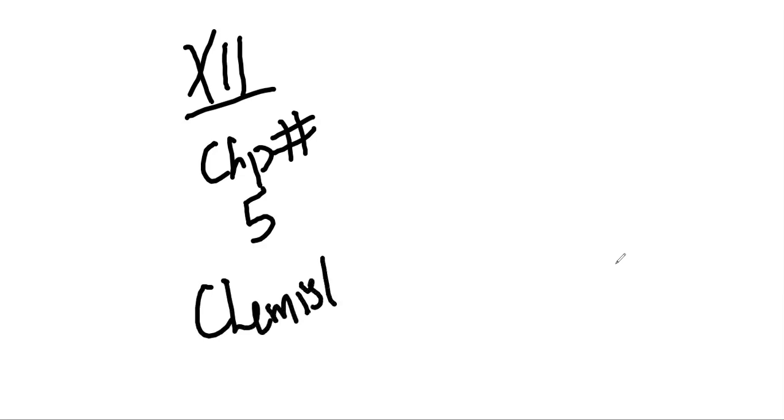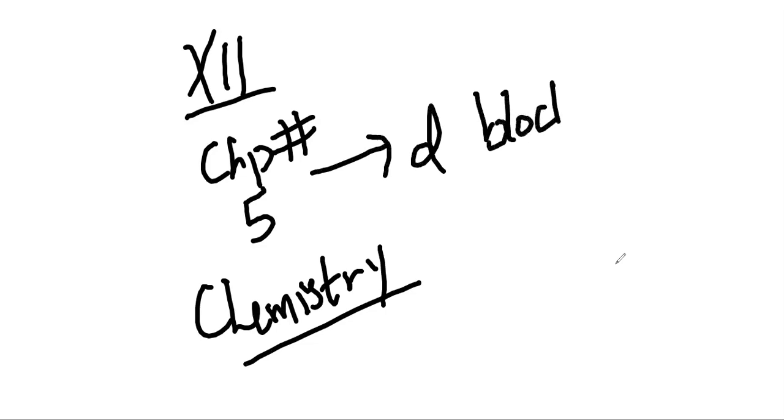Assalamu Alaikum, this is Ratulha, welcome to my channel. I am starting with second year chapter number five chemistry, first chapter number five d-block elements. The elements whose electronic configuration ends on d orbital or is partially filled in the d orbital are called d-block elements.